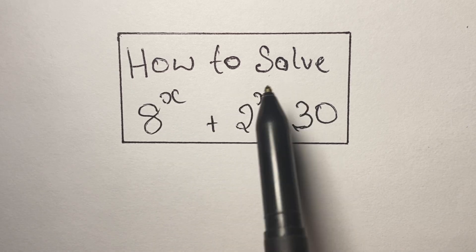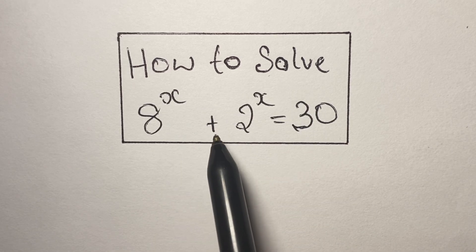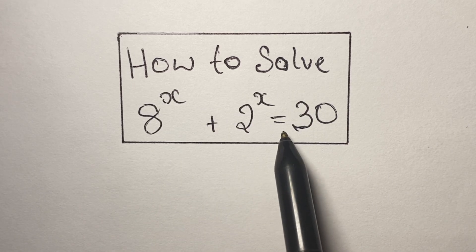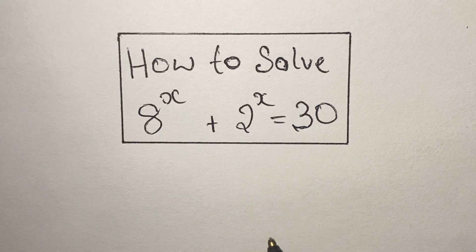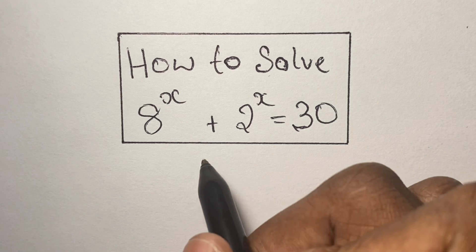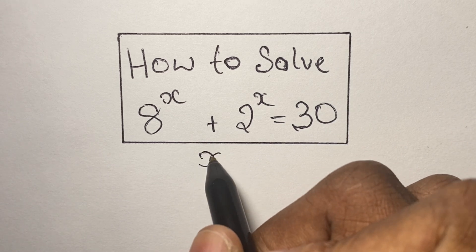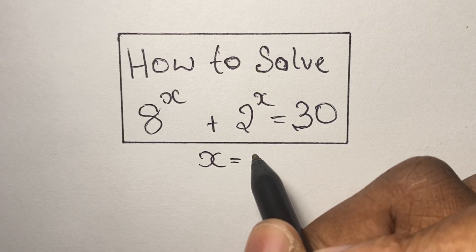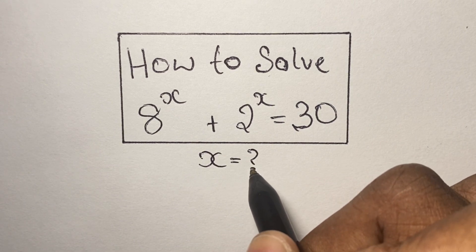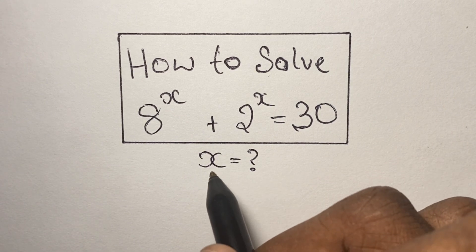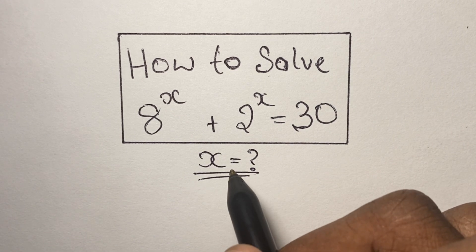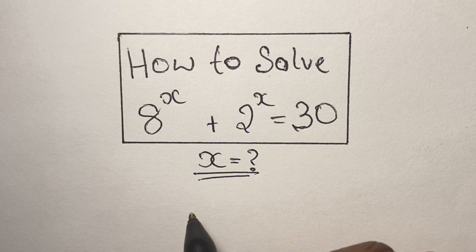Greetings again everyone, welcome back to my channel. Here we have another algebraic exponential equation that we are going to solve. We have 8 to the power of x plus 2 to the power of x is equal to 30, and we are given to find the value of x.